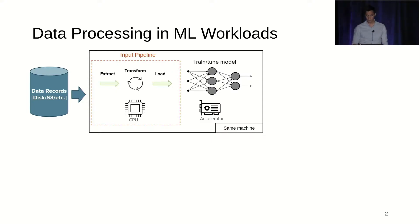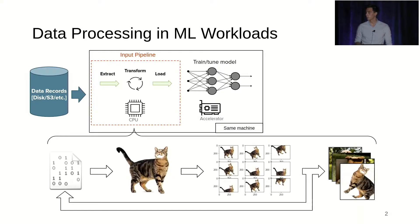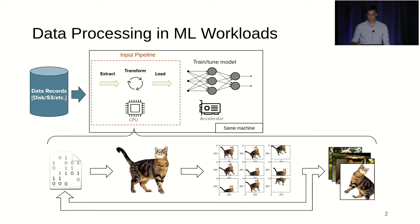Our work focuses on the input pipeline. A typical example is you have some binary data that you deserialize, you obtain some images, apply random transformations, and then obtain batches. As you can see, this is a monolithic design — both the input pipeline and the model run on the same machine.